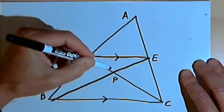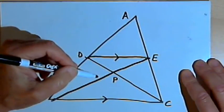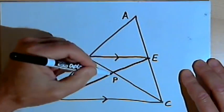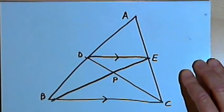Now, I want to show that I have two similar triangles. I want to show that triangle DEP is similar to triangle CBP. Here's how I'm going to do that. I've got two parallel lines,